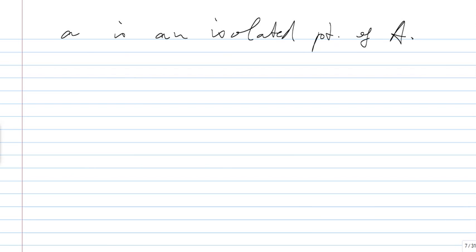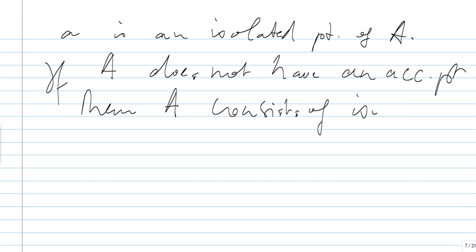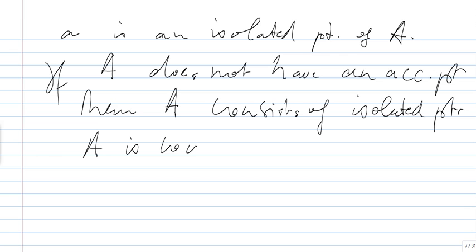This clearly implies that if A does not have an accumulation point, then A consists entirely of isolated points. From the first part, A would then be countable — a contradiction. Therefore, if A is uncountable, A must have an accumulation point.